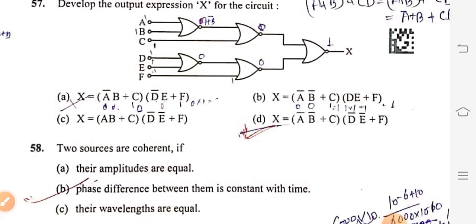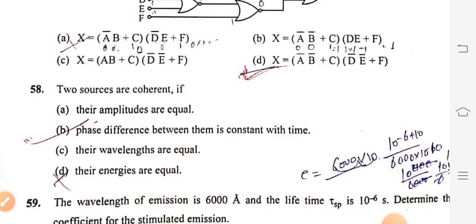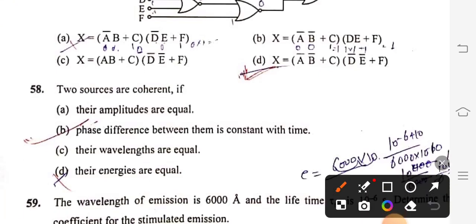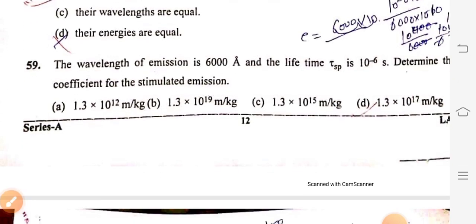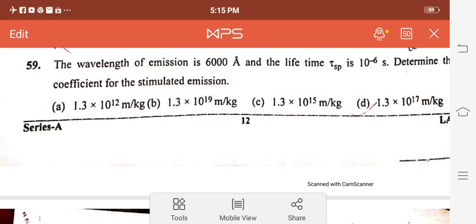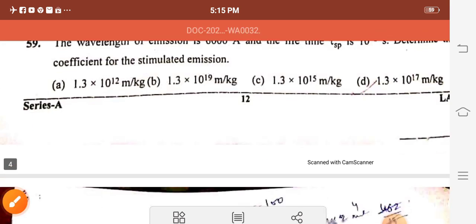Question 58: Two sources are coherent if their phase difference between them is constant with time, option B. Question 59: The wavelength of emission is 6000 angstrom and the lifetime tau is 10 to the power minus 6 seconds. Determine the coefficient for the stimulated emission. Right option is 1.3 into 10 to the power 17 meter per kg, option D.